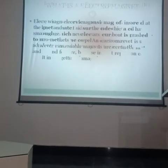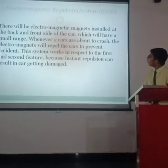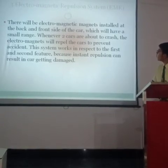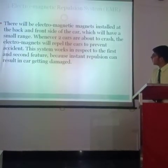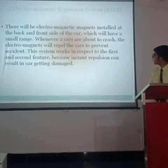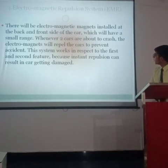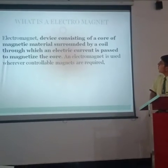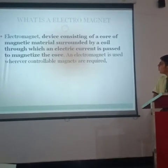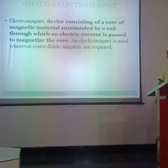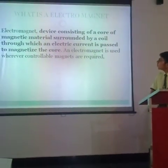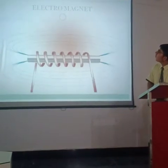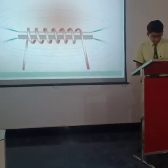Electromagnetic Repulsion System. There will be electromagnetic magnets installed at the back and front side of the car which will have a small range. Whenever two cars are about to crash, the electromagnet will repel the cars to prevent the accident. This system works in conjunction with the first and second features because instant repulsion could result in the car getting damaged otherwise. An electromagnet is a device consisting of a core of magnetic material surrounded by a coil through which an electric current is passed to magnetize the core. Electromagnets are used whenever controllable magnets are required. Here is the diagram of an electromagnet and we have a simulation for it too.